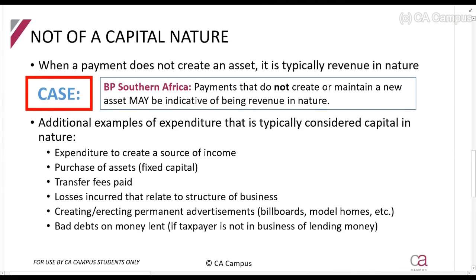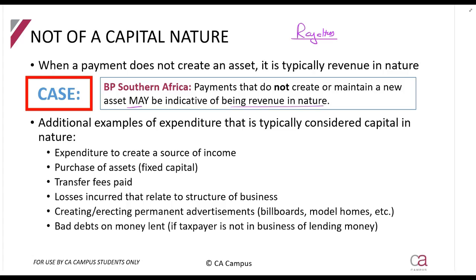The BP South Africa case gave us another way of looking at it. They said: if you have payments that don't create or maintain a new asset, then it may be indicative of being revenue in nature — so it's not capital. BP South Africa had to keep paying royalties to the big international company to belong to the BP group. SARS said those royalties belong to the structure — to the name and structure of BP. But the court said it is not capital because they already had the asset — the name. The payments just maintained it and allowed them to continue using it. They were not creating a new asset every time they paid the royalties, so it is not considered capital in nature.